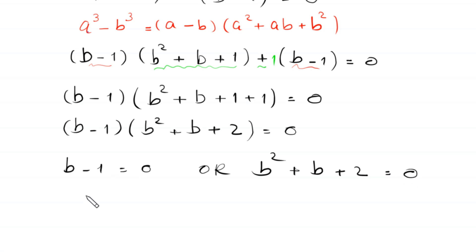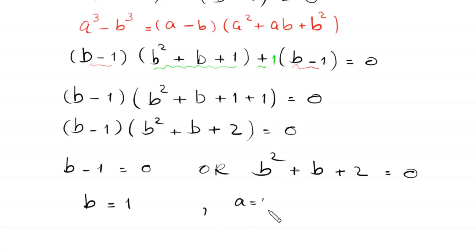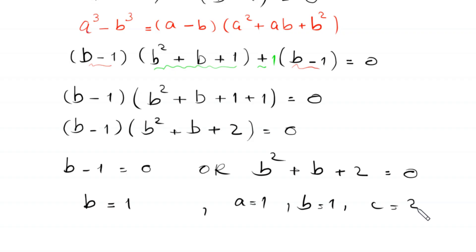From this we get either b minus 1 equals 0, or b squared plus b plus 2 equals 0. From b minus 1 equals 0, we get b equals 1. For the quadratic equation b squared plus b plus 2 equals 0, we identify a equals 1, b equals 1, and c equals 2.